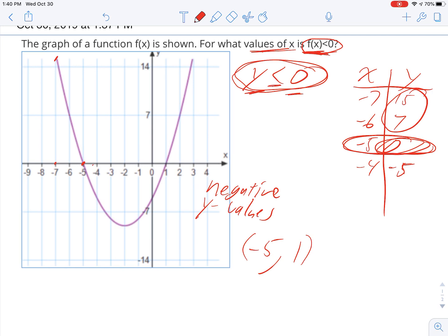If this had said less than or equal, then we would have used the square bracket. But it didn't, so we don't, and so that is our answer.